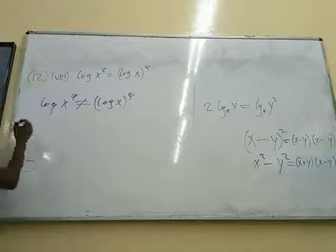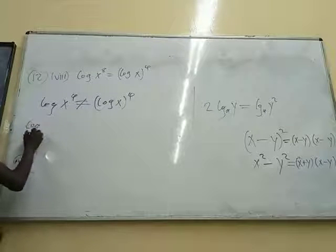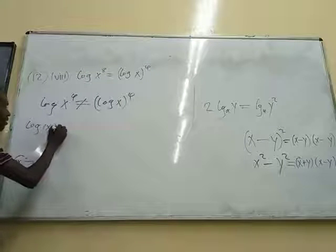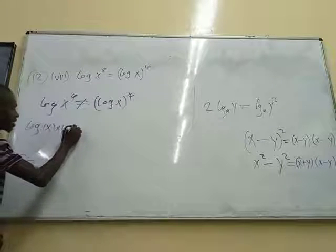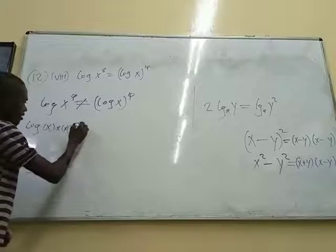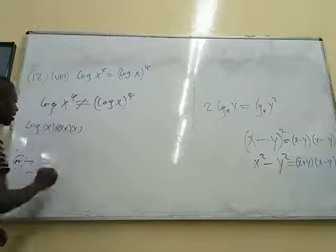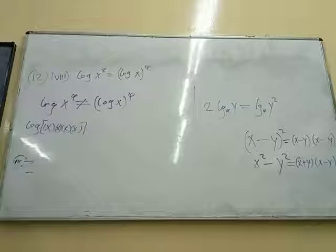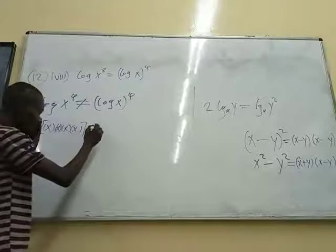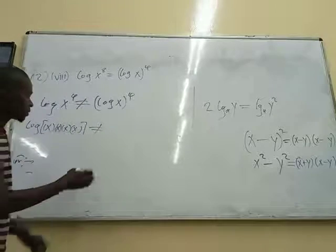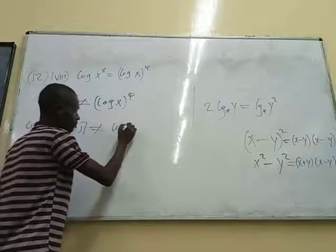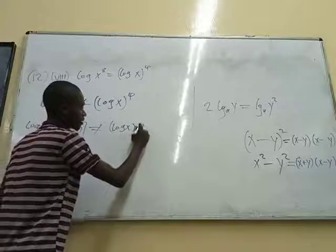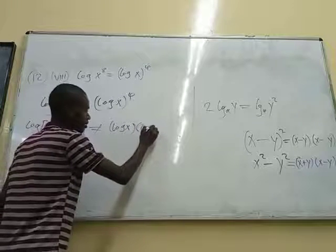This one simply means that you have log, and then this is x times x times x times x, like that. So this simply means that these x are multiplying, they are coming about 4 times. And then this other side simply means that the log of x is multiplying about 4 times. It's multiplying itself 4 times.